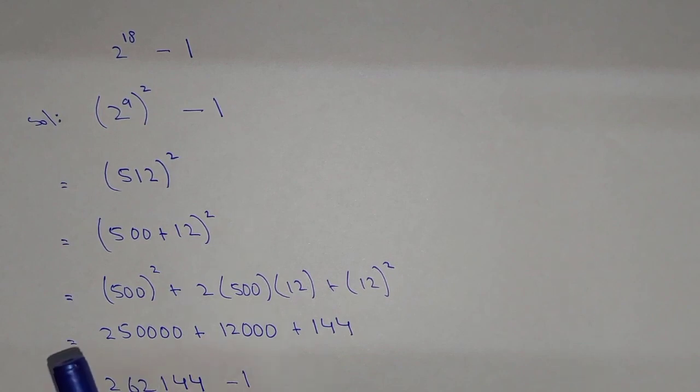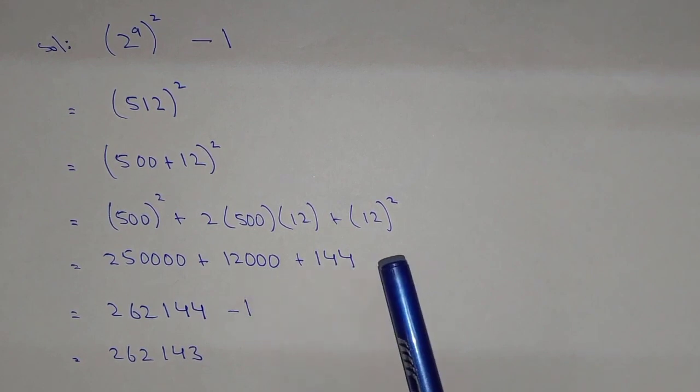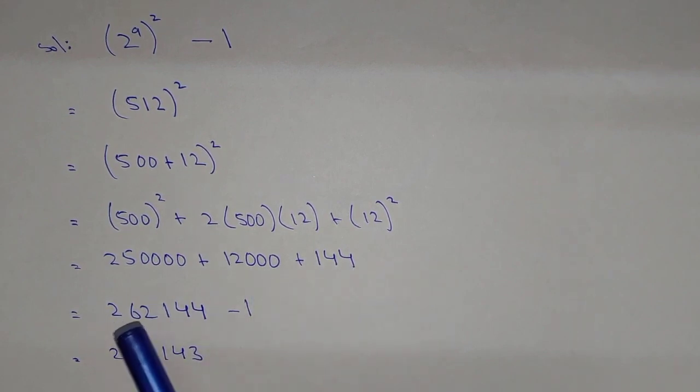Now we need to add all these: 250,000 + 12,000 + 144 = 262,144.